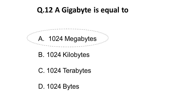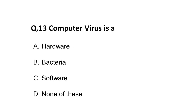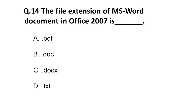Moving on: the thirteenth question — a computer virus is a malicious software designed to infect your computer or some of your computer programs. Remember: a computer virus is not bacteria, hardware, or anything else — it is software designed to infect your computer. The fourteenth question: the file extension of MS Word document in Office 2007 is — remember this file extension, as there will surely be a question on file extensions. The extension for MS Word in Office 2007 is .docx.